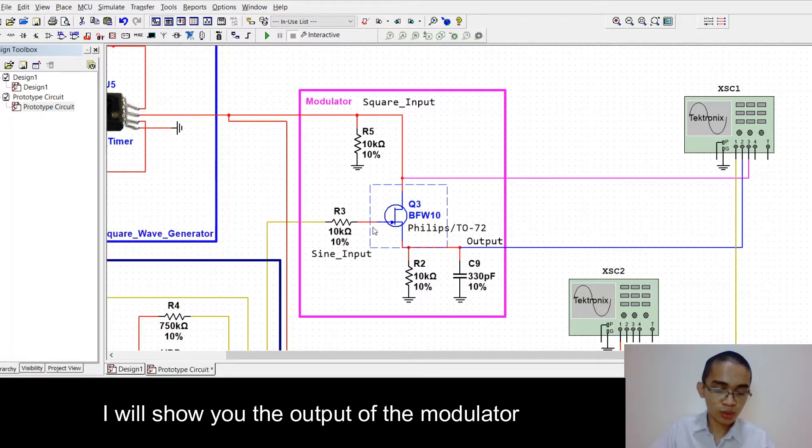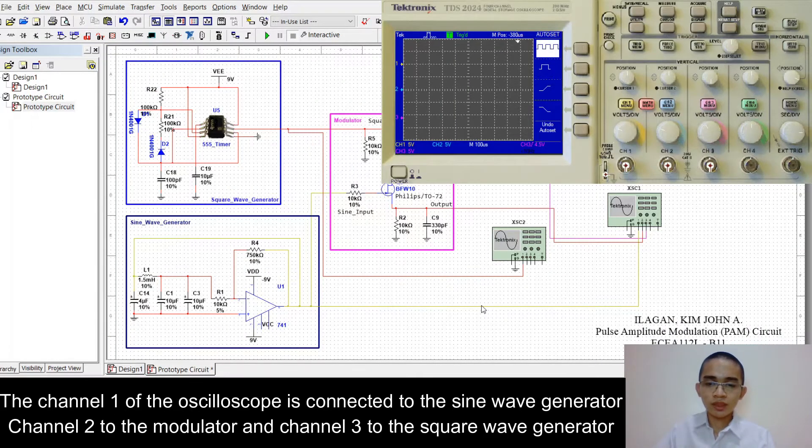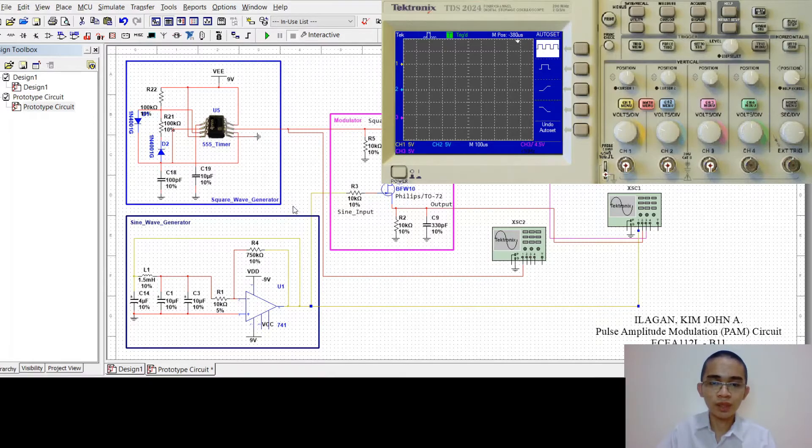Now, I will show you the output of the modulator. The channel 1 of the oscilloscope is connected to the sine wave generator, channel 2 to the modulator, and channel 3 to the square wave generator. Now, I will show you the output.